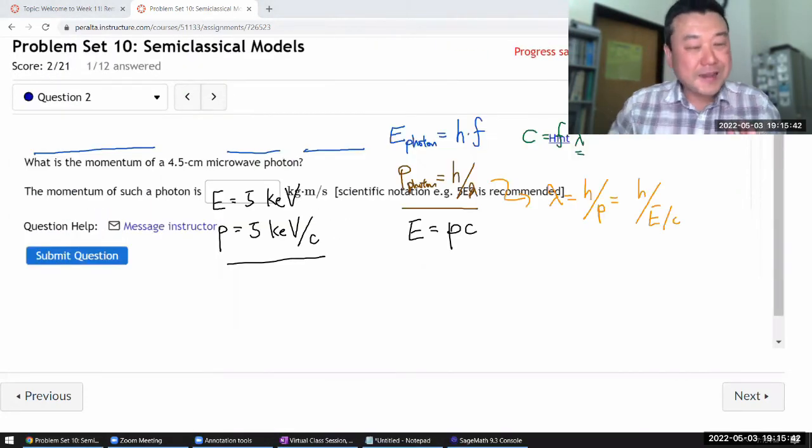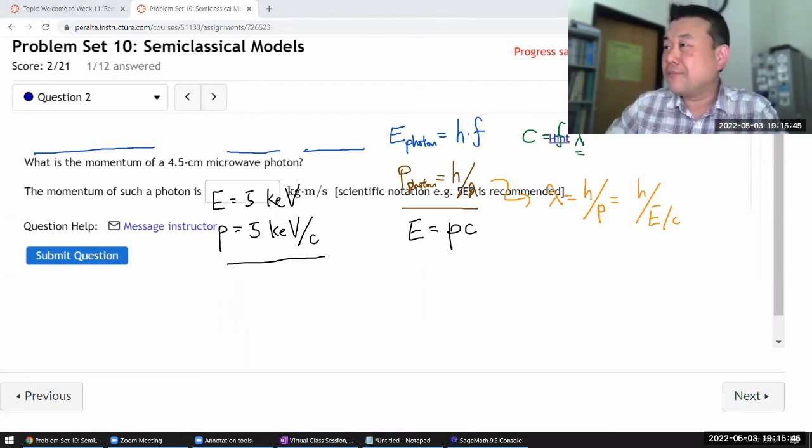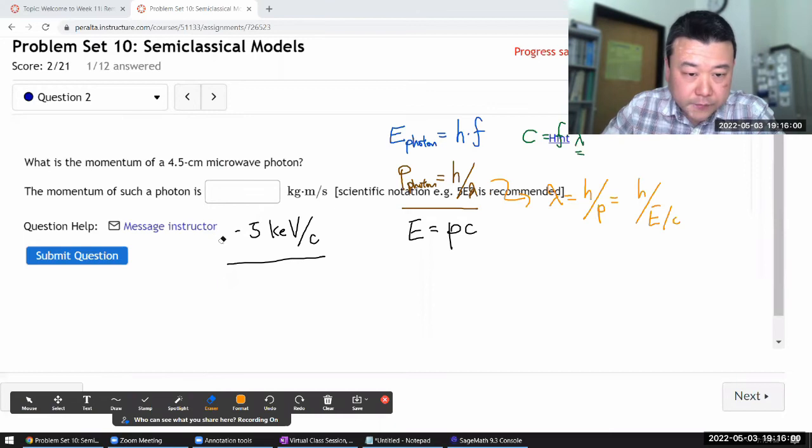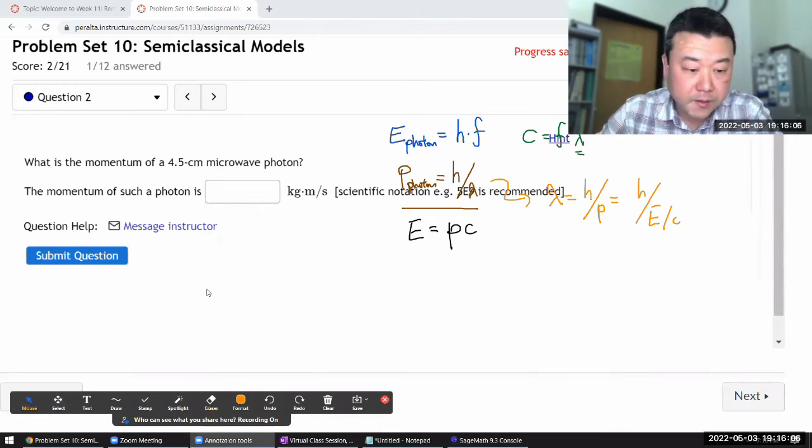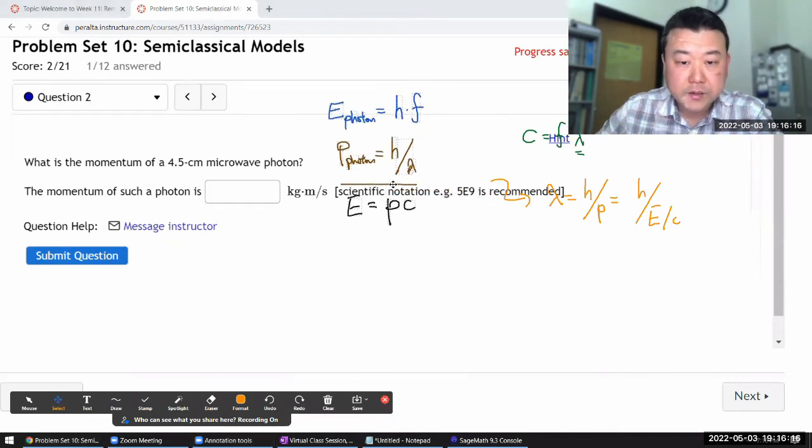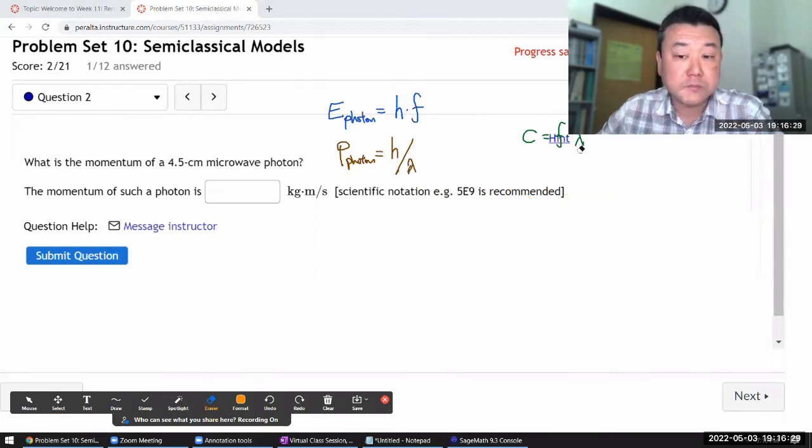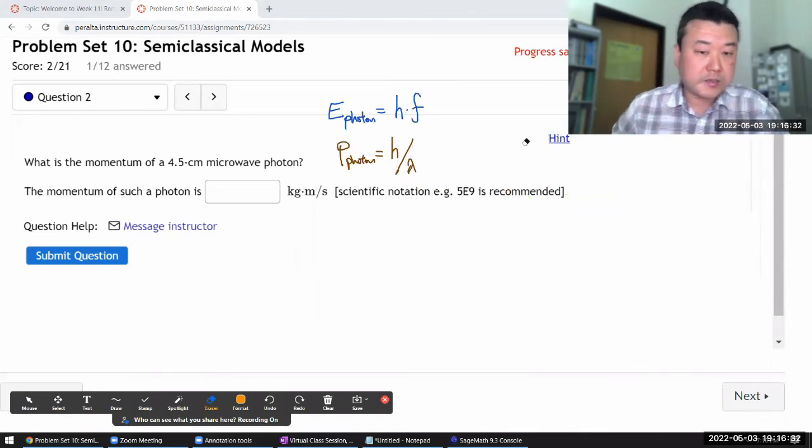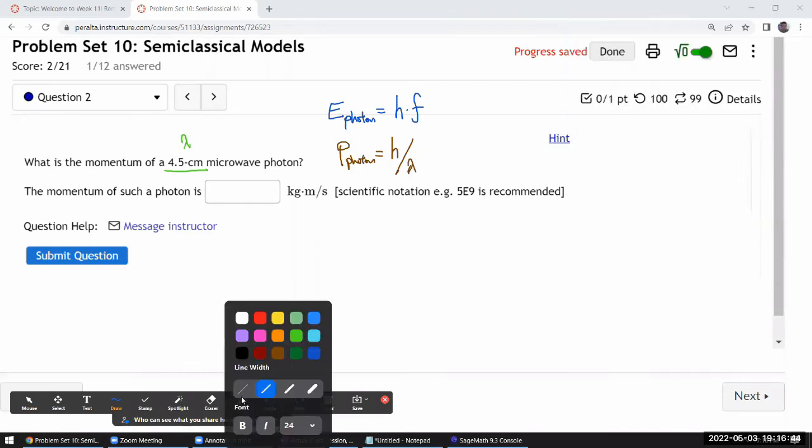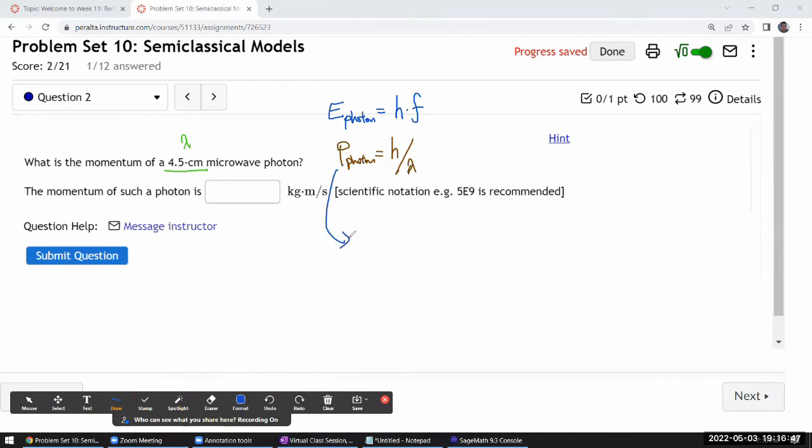Okay, good. So, the next question asks, what is the momentum of the microwave photon? So, let me just erase some of the stuff, but keep some of the relationships that will be useful here. The relationship that I feel will be useful is the De Broglie relationship, because it directly relates momentum to wavelength. So, in this question, we are given the wavelength of the photon in centimeters. So, for the momentum, all we have to do is solve this relationship for the momentum.